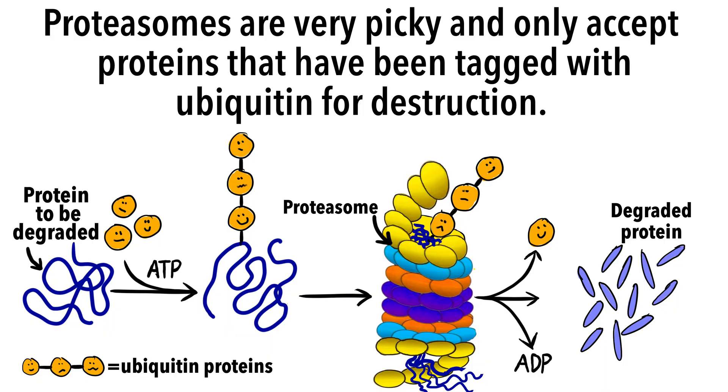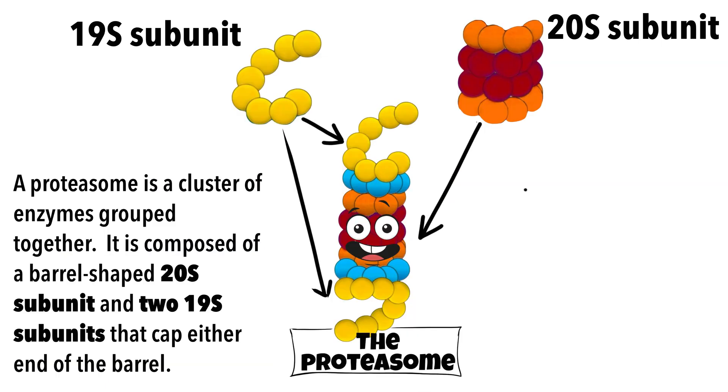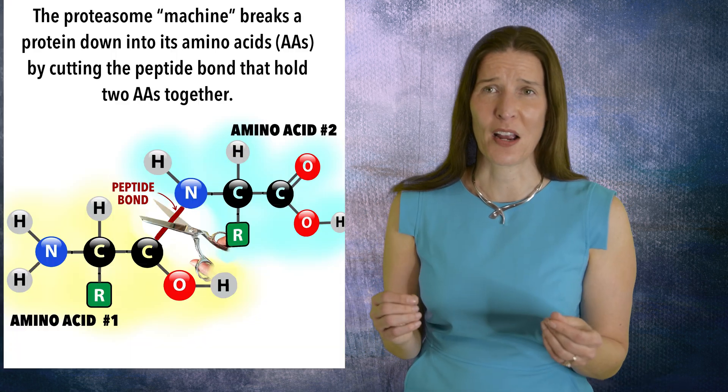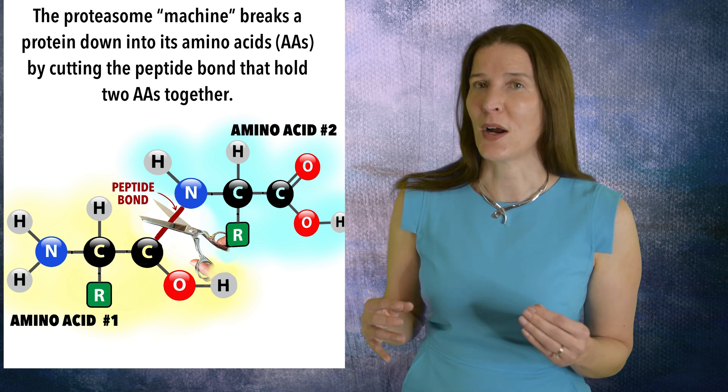They are very picky and only accept proteins that have previously been tagged with ubiquitin proteins for destruction. A proteasome is a cluster of enzymes grouped together, composed of a barrel-shaped 20-S subunit and two 19-S subunits that cap either end of the barrel. The 19-S subunits grab proteins that have been tagged with ubiquitin and bring them to the 20-S subunit of the proteasome for destruction. The environment inside the proteasome is highly acidic. As the damaged protein moves through the proteasome, specific enzymes systematically break it down and amino acids come out of the other end of the barrel. These amino acids can then be reused for many purposes in the cell.